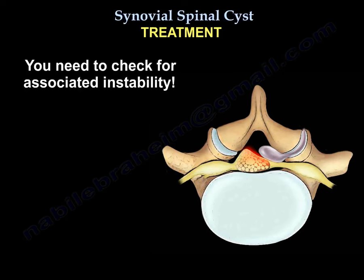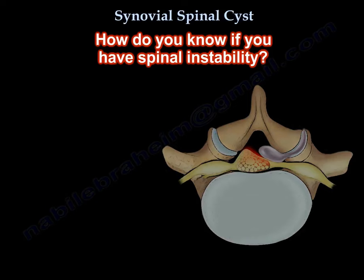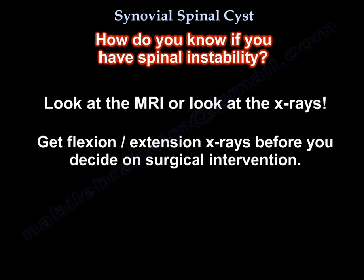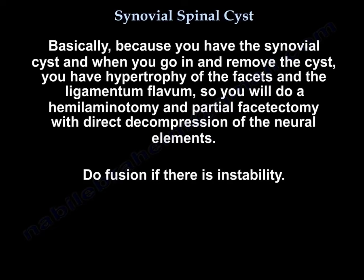You need to check for associated instability. Look at MRI or x-rays, or get flexion-extension x-rays before you decide on the surgical intervention. Because you have the synovial cyst, when you go in, you remove it. Then, given the hypertrophy of the facets and the ligamentum flavum, you will do hemilaminotomy and partial facetectomy with direct decompression of the neural elements, and you will do fusion if there is instability.